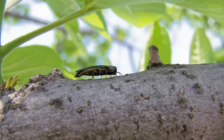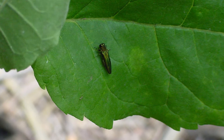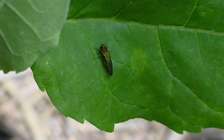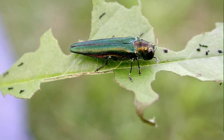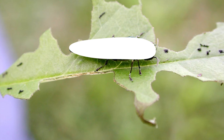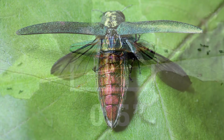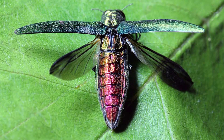On warm sunny days, late spring through summer, you may see adult emerald ash borers on the bark and leaves of ash trees. Their thin, oval-like bodies are about half an inch long, with a distinctive metallic green color and purple abdomen.